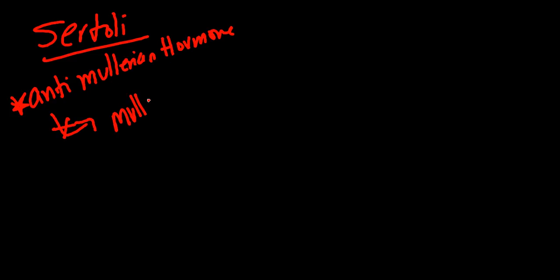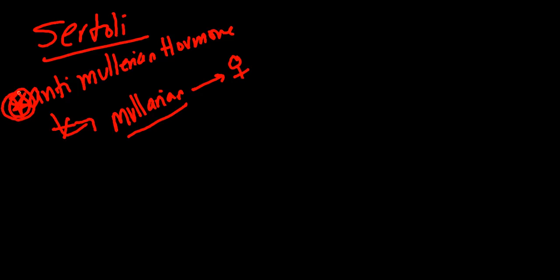In effect, what this is going to do is block the development of the Müllerian duct. Your Müllerian structures are going to be your female structures — like your uterus and your internal female structures. Your Müllerian duct turns into your female characteristics. Thankfully, I have Sertoli cells because they're going to secrete anti-Müllerian hormone, which will prevent the development of the Müllerian duct system and block the development of female internal characteristics.